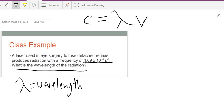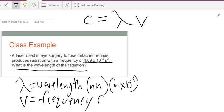We know, and this is usually in nanometers, which is the same thing as meter times 10 to the negative ninth. Now, V is frequency. Frequency is usually in 1 over seconds or seconds to the negative 1.